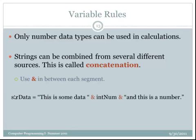In this example, I have string data, which is a string variable that's assumingly already declared, equals, there's the assignment operator, this is some data, and remember that's in quotation marks, ampersand, int num, ampersand, and this is a number. So that ampersand is going to join those strings, and that integer, whatever that int num value is, will be put into that string, and all of that becomes one string that's going to go into the variable str data.